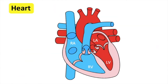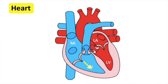Now let's go through the full process. Deoxygenated blood from the body flows into the right atrium via the superior and inferior vena cava. The right atrium contracts and blood flows through the tricuspid valve into the right ventricle. The ventricle contracts and blood flows up through the pulmonary valve into the pulmonary artery, which is then taken out of the heart into the lungs.